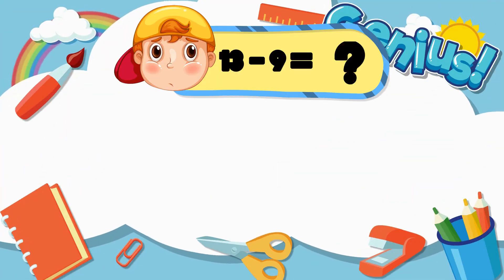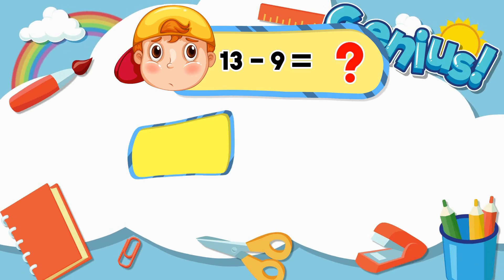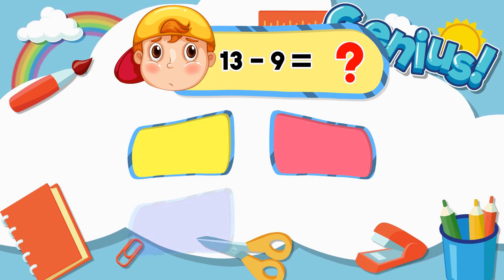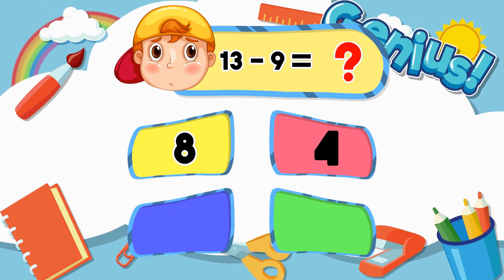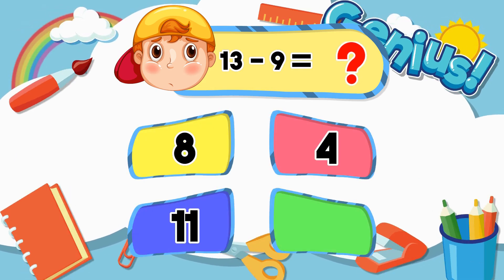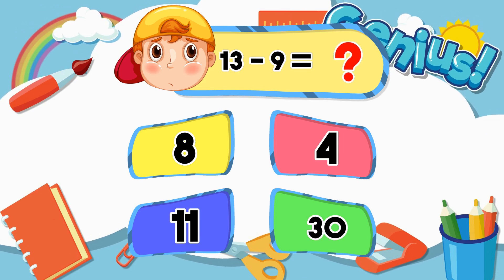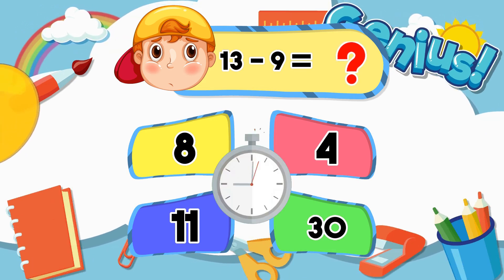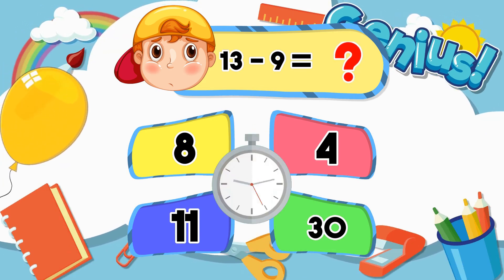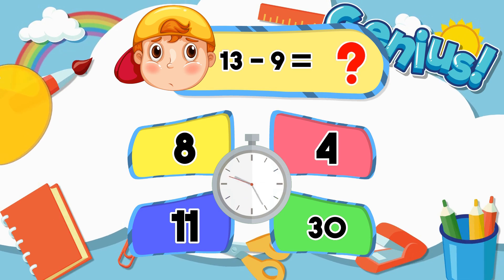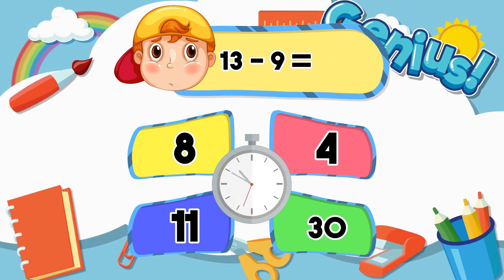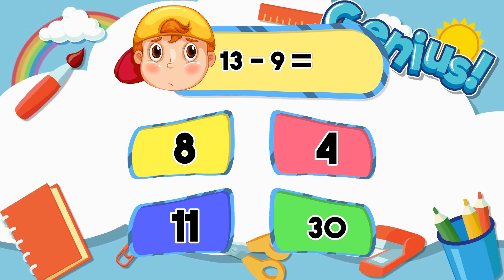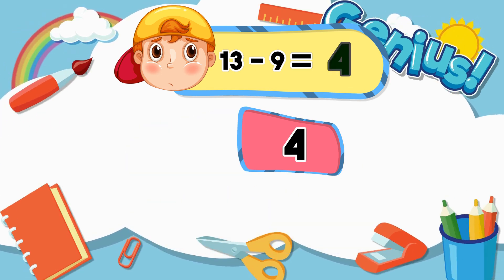What is 13 minus 9? Options: 8, 4, 11, 30. Answer: 4.